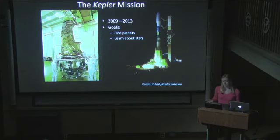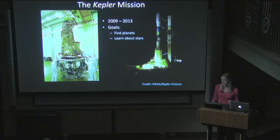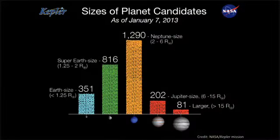The Kepler mission has done a fantastic job teaching us about those little planets because it is incredibly sensitive to small signals. The Kepler mission lasted for four years and gave us an incredible wealth of data. You can see in this plot of the number of planets found of different sizes just how important the Kepler mission has been for changing our picture of planets orbiting other stars.